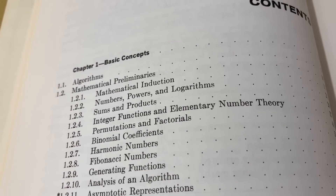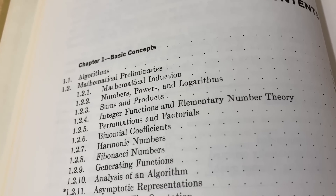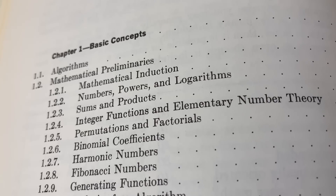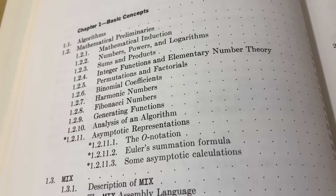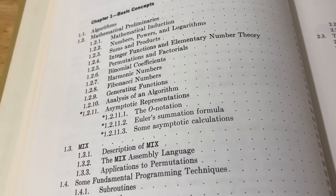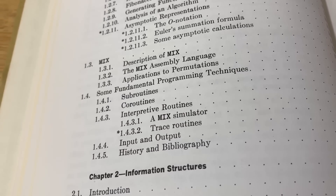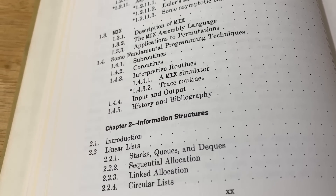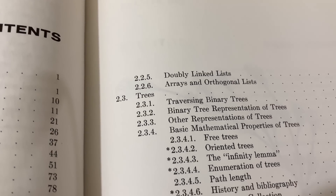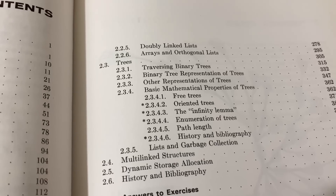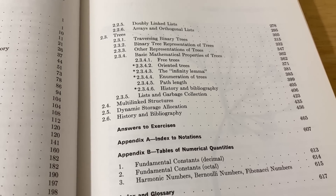Here are the contents, and he starts with some math — so if you're watching a math channel, you might recognize some of these things: mathematical induction, numbers, powers and logarithms, sums and products. By the way, Newth has a really fantastic math book called Concrete Mathematics, which is also excellent. Then information structures: linear lists, doubly linked lists — these are things you might recognize if you took an introductory course in computer science.